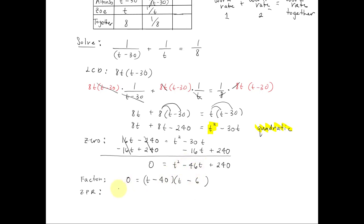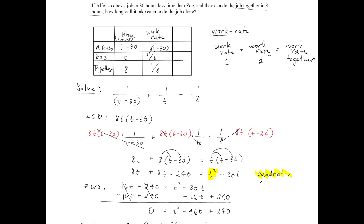Let's apply the zero product rule and set each factor equal to 0 and solve. Solving we get t equals 40 or t equals 6. Going back to the original problem, let's make sure we answer the question: how long will it take each to do the job alone?